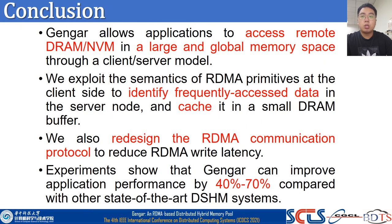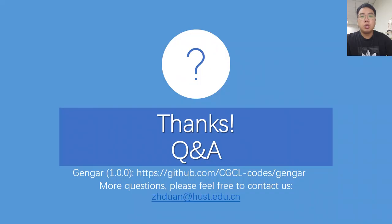Finally, to conclude: Gengar allows applications to access remote DRAM and NVM in a large global memory space through a client-server mode. We exploit the symmetry of RDMA parameters at the client side to identify hot data in server nodes and cache it in a small DRAM buffer. We also redesigned the RDMA communication protocol to reduce RDMA write latency. Experiments show that Gengar can improve application performance by 40% to 70% compared with other state-of-the-art DSHM systems. That's all for the introduction of Gengar. For more detailed information, please check out our paper. I will open source the first version of Gengar on GitHub. Thank you for your attention.